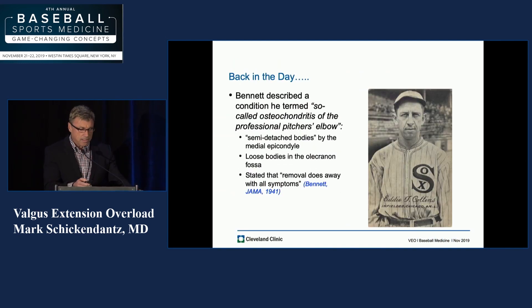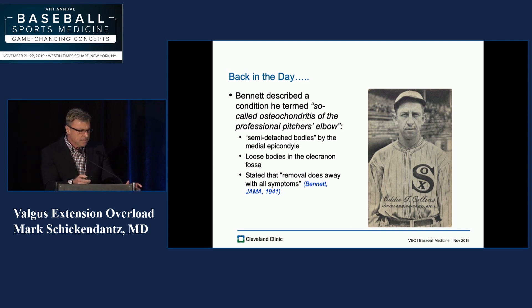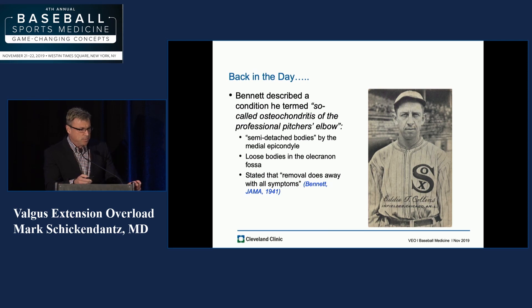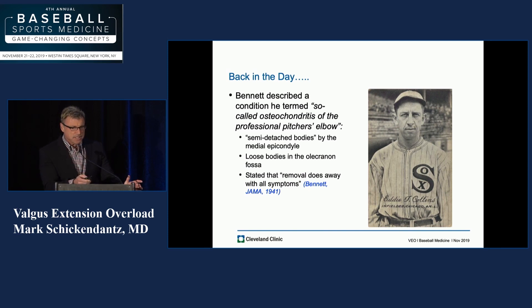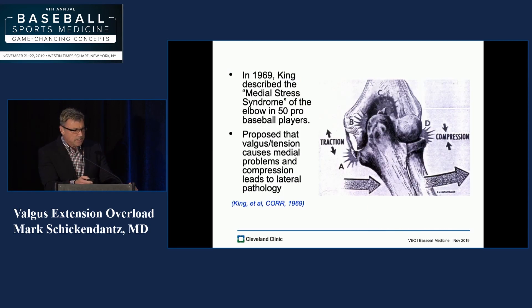We'll talk about VEO. You've heard a little bit about that already this morning in Pete's talk. This goes back a long way, all the way back into the 1940s. A guy named Bennett first described what he called the so-called osteochondritis of the professional pitcher's elbow. If you read his article, he talks about semi-detached bodies by the medial epicondyle, loose bodies in the olecranon fossa, and stated that removal does away with all symptoms. What he's describing is valgus extension overload and chronic UCL insufficiency as we know it today, described all the way back in 1941.